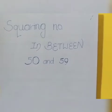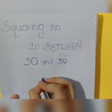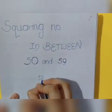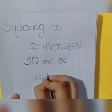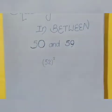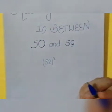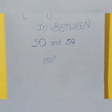So let's take a number under them, like 52. If we are going to square 52, then there's a short trick for it. You can do it with normal method, 52 into 52, but it will be long.